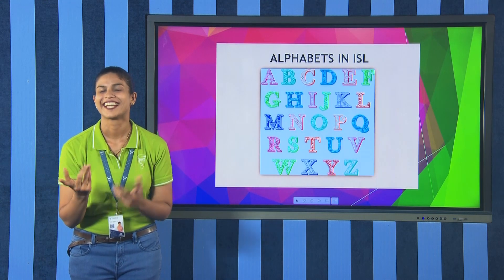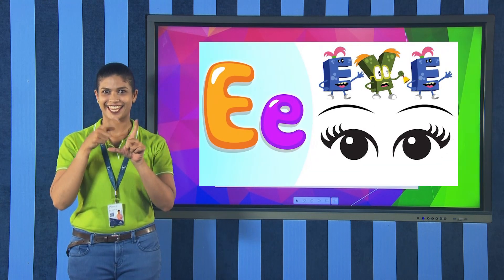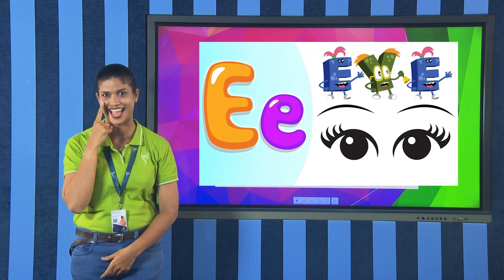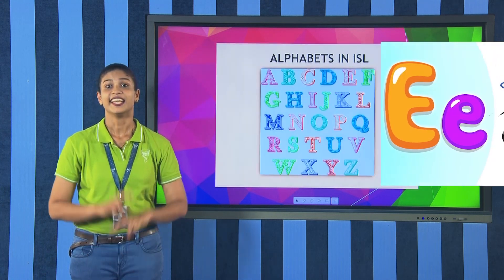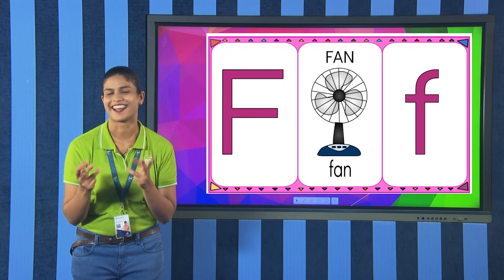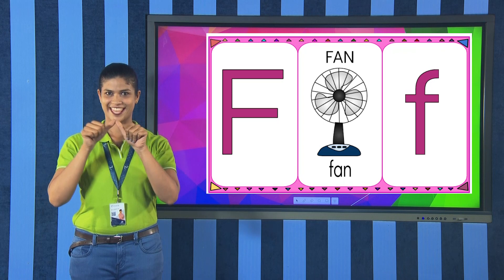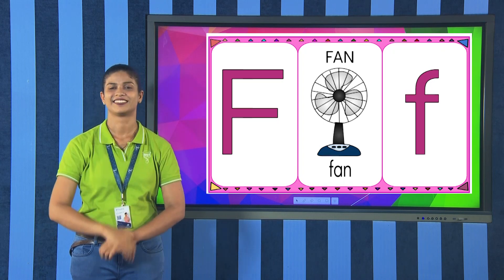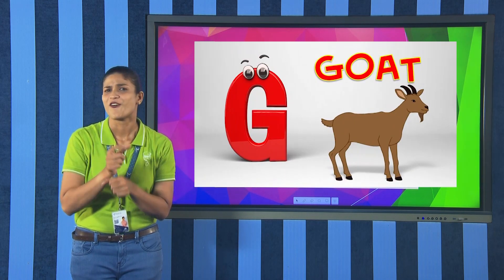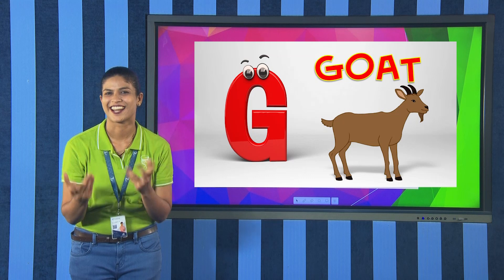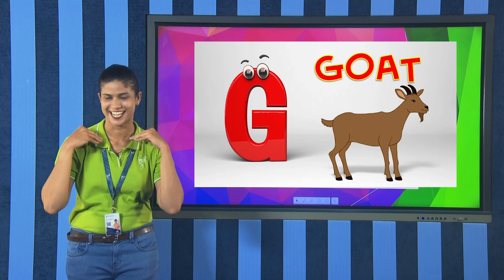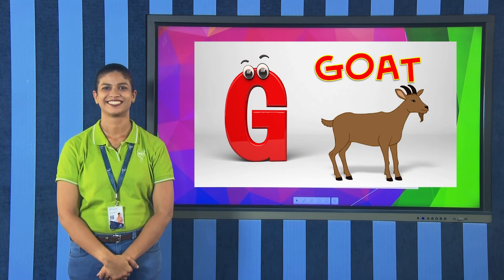Letter E — what is the word? E, Y, E — eye. What is the word with F? F, A, N — fan. Next, letter G — G, O, A, T — goat. This is the sign for goat.